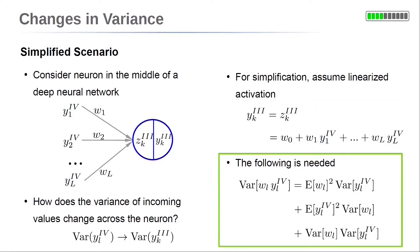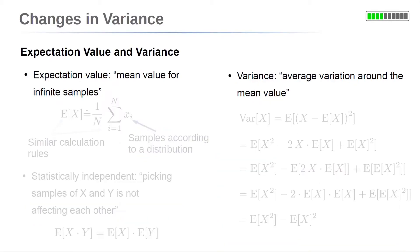Next, we will prove the following relation for the output of the l-th neuron of layer number 4, yl⁴, and its corresponding weight wl. The variance of the weight times the output is equal to the squared expectation value of the weight times the variance of the output, plus the squared expectation value of the output times the variance of the weight, plus the variance of the weight times the variance of the output. So we need to know the basics of expectation value and variance.